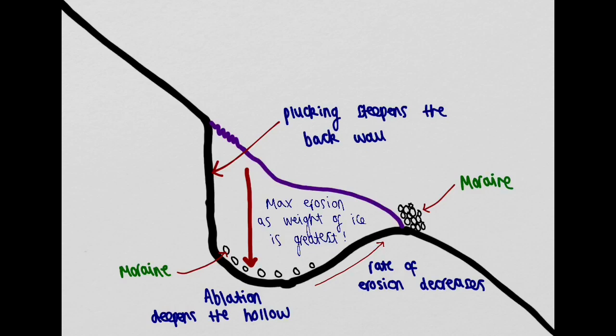This material from plucking and frost shatter is moved along under the ice, abrading the hollow by scratching the surface rock. This is further aided under the ice by the fact that the pressure melting point is often surpassed, allowing melt water to exist at the base and allowing basal sliding to occur.